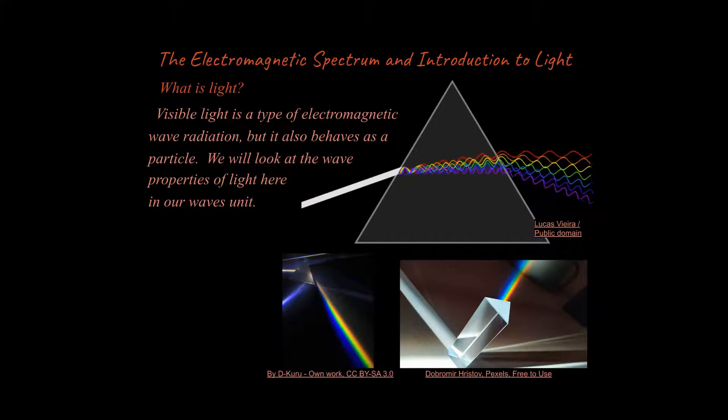We're in our unit of waves. Now we're talking about our subsection of light here. So aspects of light where light behaves as if it is a wave. And in most ways, light does behave like it's a wave, but occasionally it behaves as if it's a particle. So it's a really interesting phenomenon. Let's say that light is a type of electromagnetic wave radiation and it behaves like a particle sometimes too. And we're going to be looking at the wave properties of light here in our waves unit.